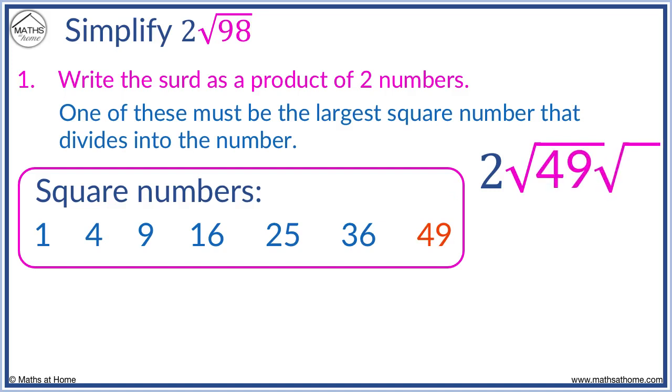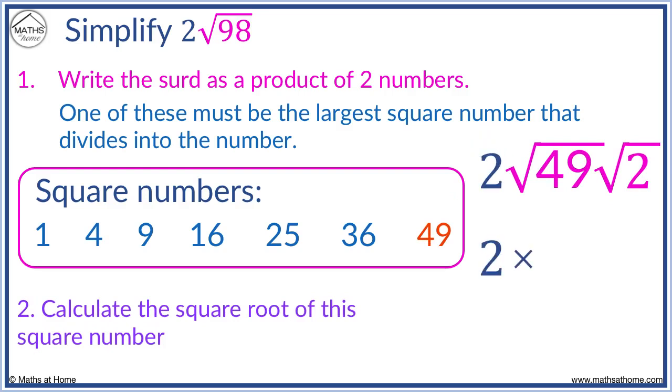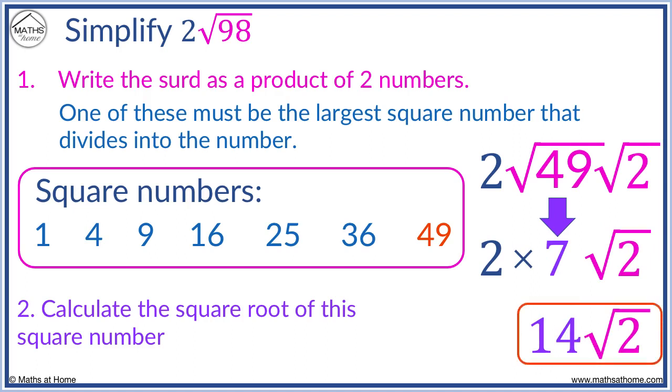49 times 2 equals 98. We leave the 2 at the front. The square root of 49 is 7. We leave root 2 as root 2. Multiplying the integers 2 times 7 equals 14. And we have root 2. 2 root 98 simplifies to 14 root 2.